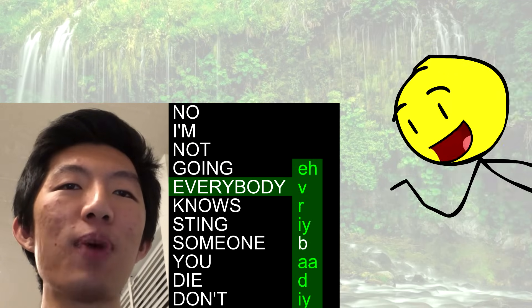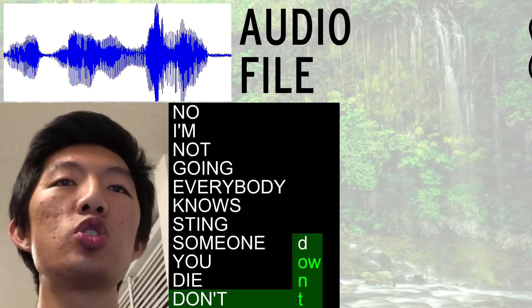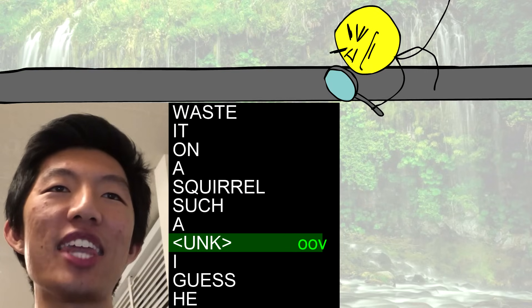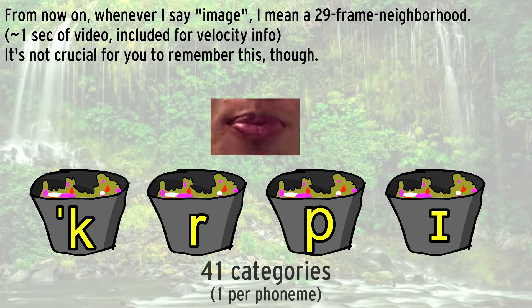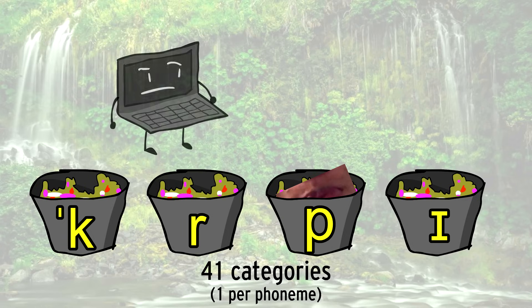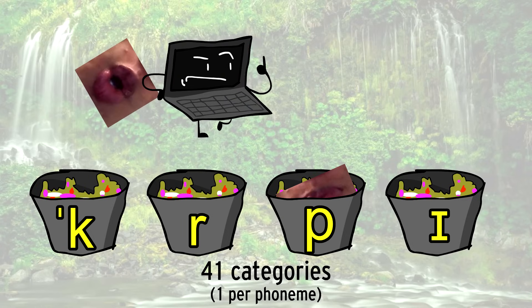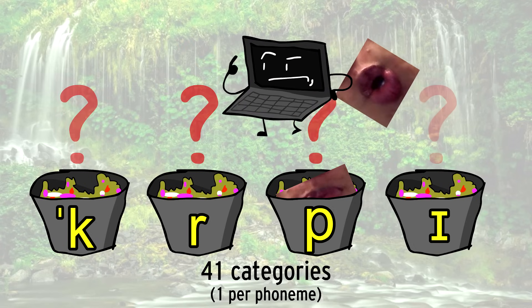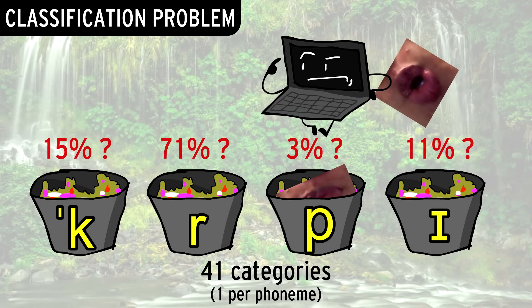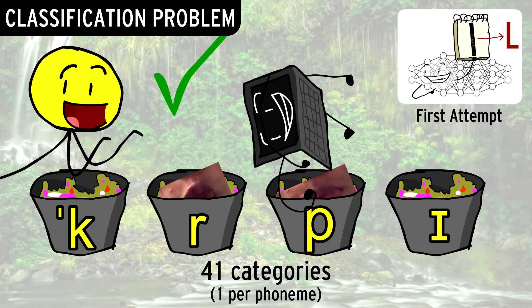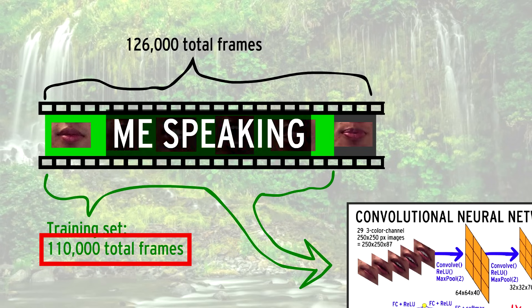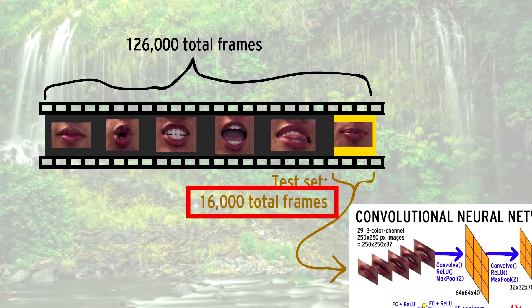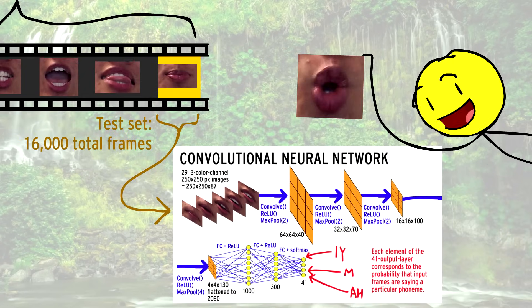With phoneme labels, we could forget about the audio file and focus solely on the phonemes, which are one four-thousandth the size. We used Adam's face recognition library to crop on the lips. Every image fits into one of 41 categories — one per phoneme. We trained a convolutional neural network with a softmax output on the first 110,000 frames of me speaking. That took 8 hours. Then we tested it on the remaining 16,000 frames to evaluate performance on unseen data.